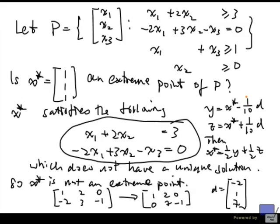And you can easily check that y and z satisfy all these constraints, and they are distinct. And so x star is not an extreme point.